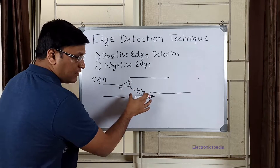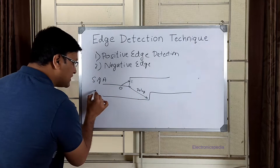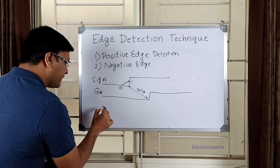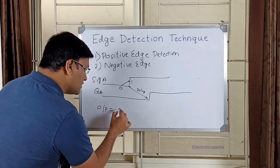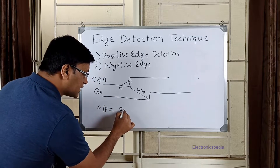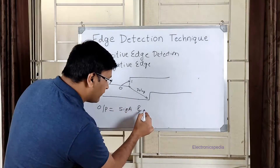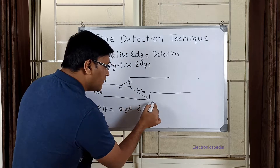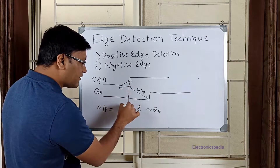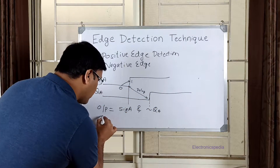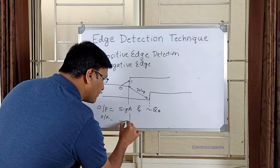To capture the pulse, I use signal A and my delayed output QA. My output will be A AND with NOT of QA. Essentially, this is the window where I'm going to capture my signal. The output is going to be a pulse — this is the positive edge detection technique.